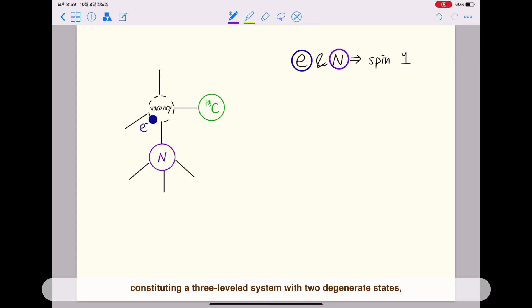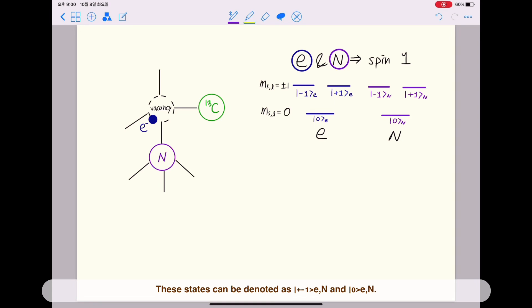Both the electron and the nitrogen nuclear show a spin one property, constituting a three-level system with two degenerate states, MSL equal plus minus one and one MSL equal zero state.